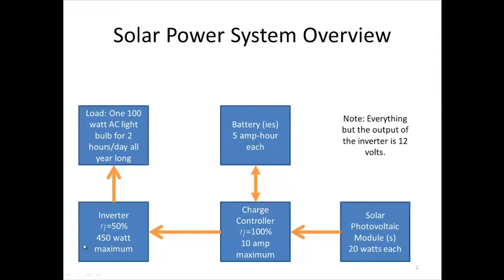Our inverter has a maximum power rating of 450 watts. Also in our system we have something called a charge controller. What a charge controller does is make sure the battery is not too overloaded or too drained, because batteries don't like to be overcharged or undercharged — it's really the decision maker of the system. We're going to use 100% efficiency for the charge controller; normally it's around 80–90%, but for simplicity we'll use 100%. The charge controller provides a maximum of 10 amps.